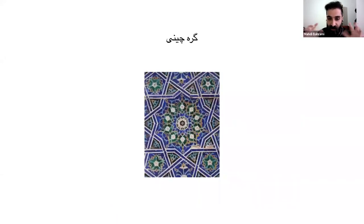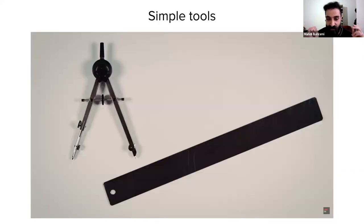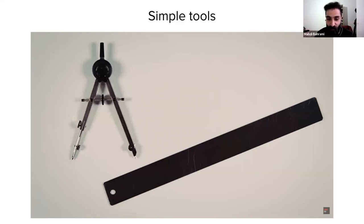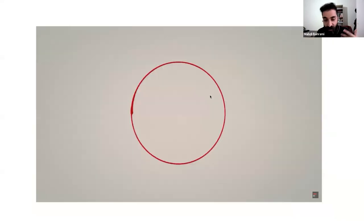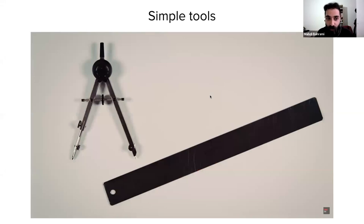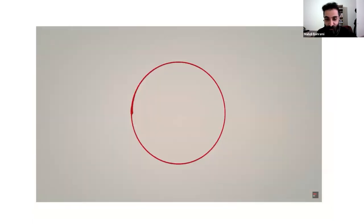I'd like to show some of the ideas I think are interesting, that I've learned about Islamic art. So we have this thing called Girih, which is a geometric concept with rules about making geometric shapes. Based on these rules, they made really complicated shapes that are amazing. And all they had was just a compass and a ruler — it's remarkable that they could draw all these complicated shapes with such simple tools.